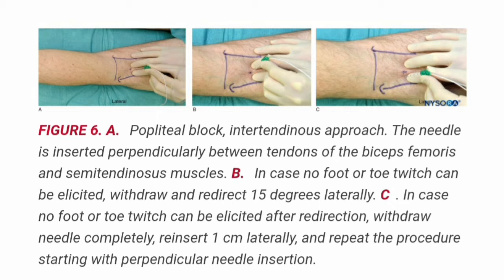Landmarks for this posterior approach are easily identified, even in obese patients, and should be routinely outlined with a marking pen. These are: 1. the popliteal fossa crease; 2. the tendon of biceps femoris laterally; 3. the tendons of semitendinosus and semimembranosus medially; and 4. the needle insertion point, marked at 7 cm above the popliteal fossa crease at the midpoint between the tendons.